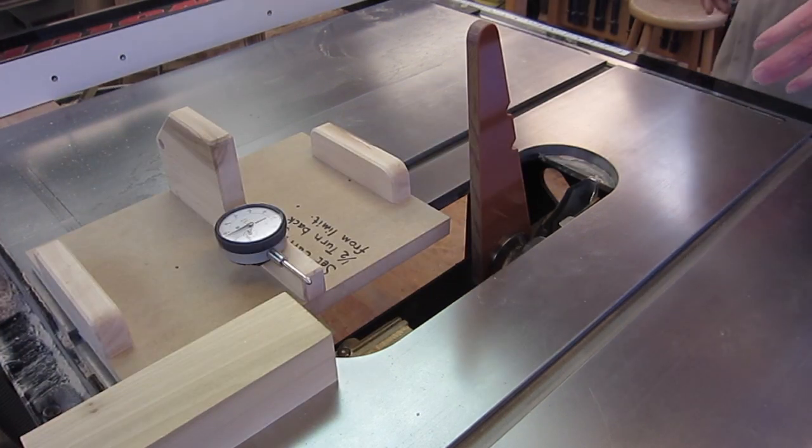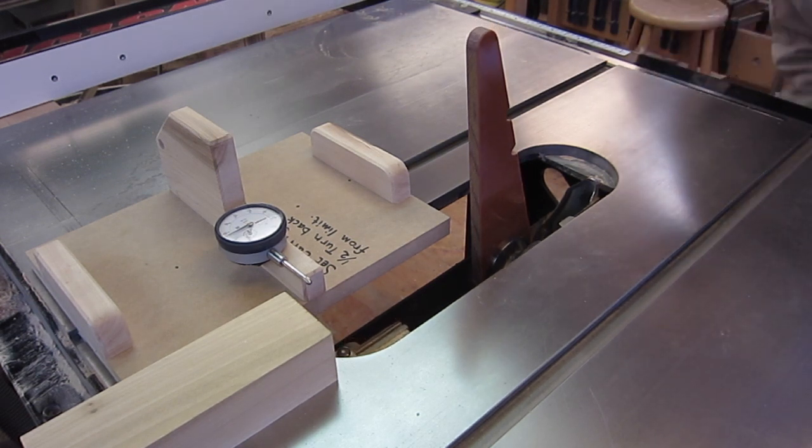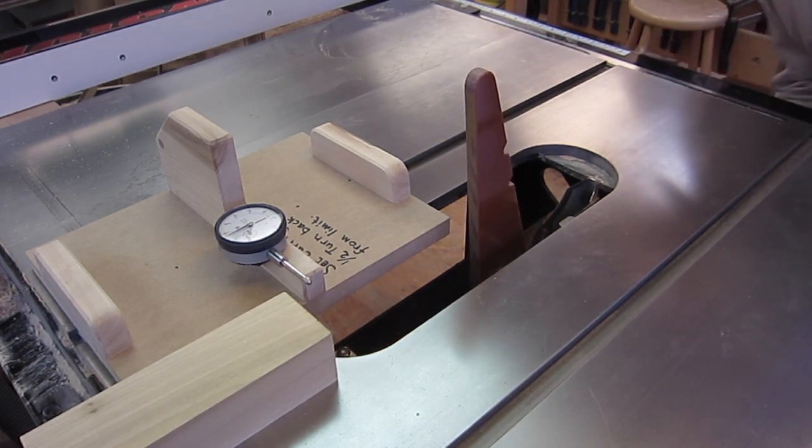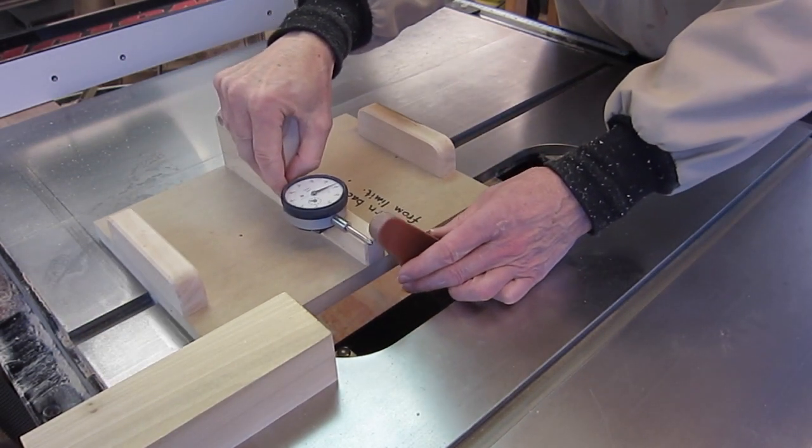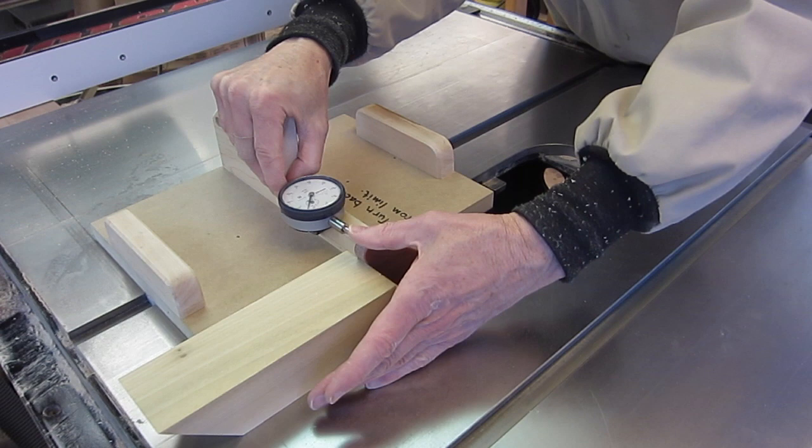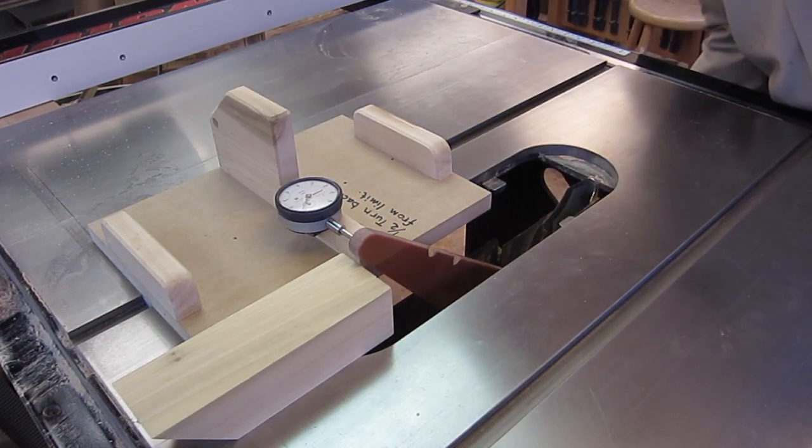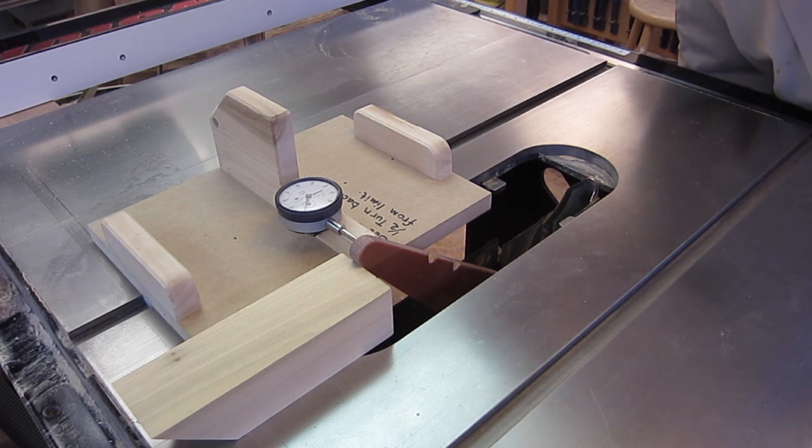The next alignment is with the carriage still at 90 degrees, but at the bottom. And I'll do the same check to see whether there's distortion at the bottom. Looks like there's not,